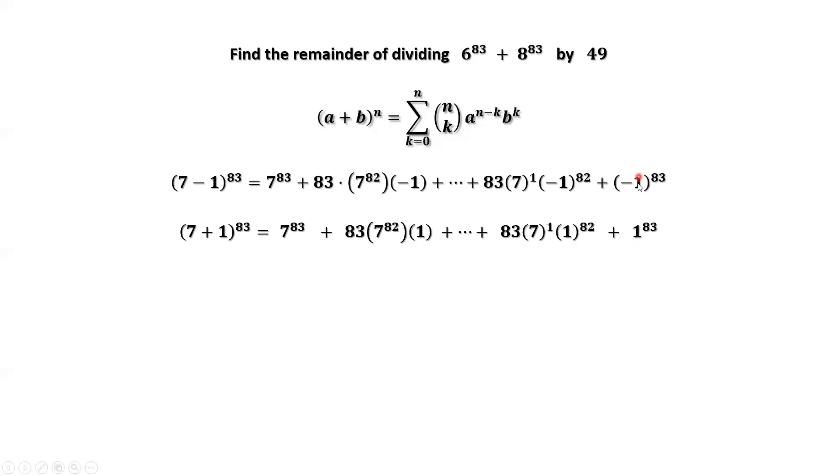For those terms with odd power numbers, negative 1 becomes negative. Now, we have those terms having opposite sign with the second equation. Here is negative, here is positive. Absolute values are the same. Here is negative, here is positive. This one and this one is the same because that's even power. Negative 1 to the even power is positive 1.